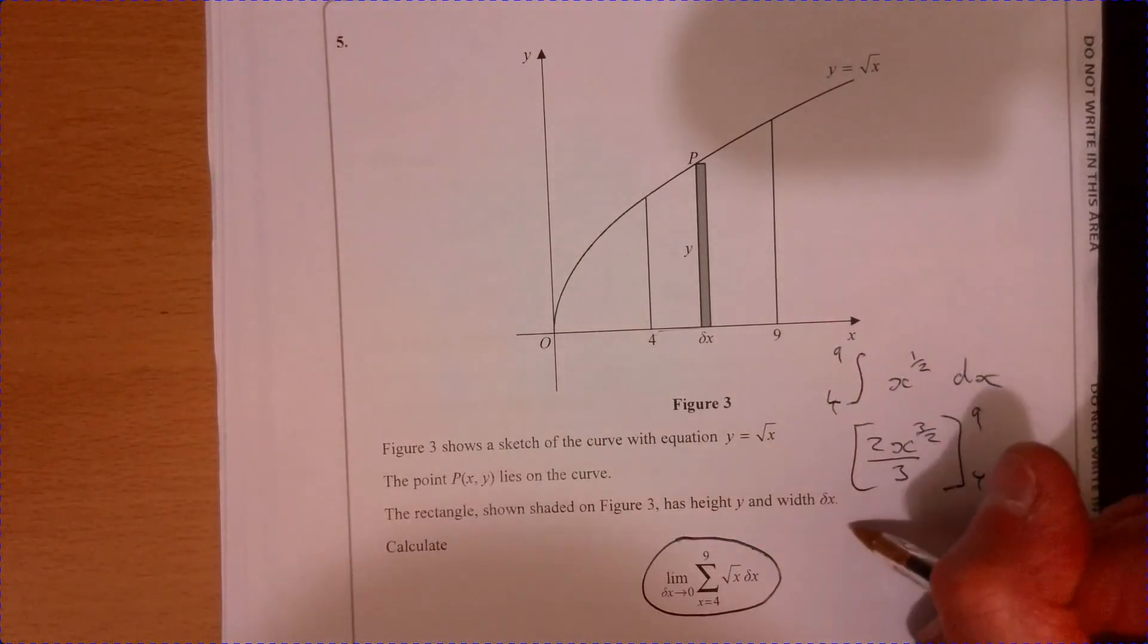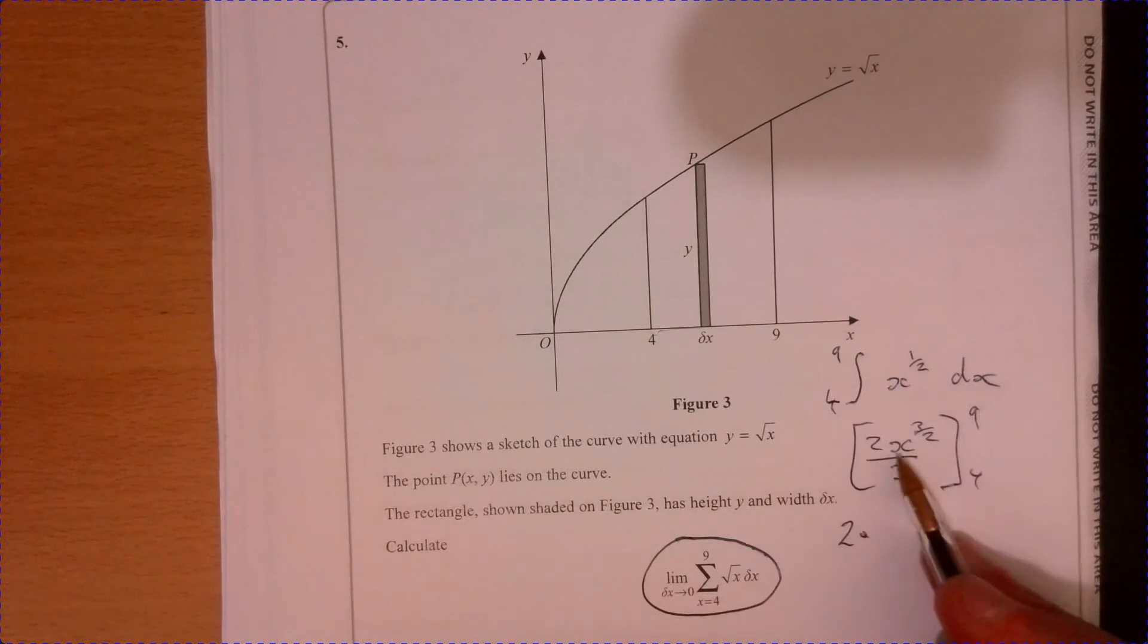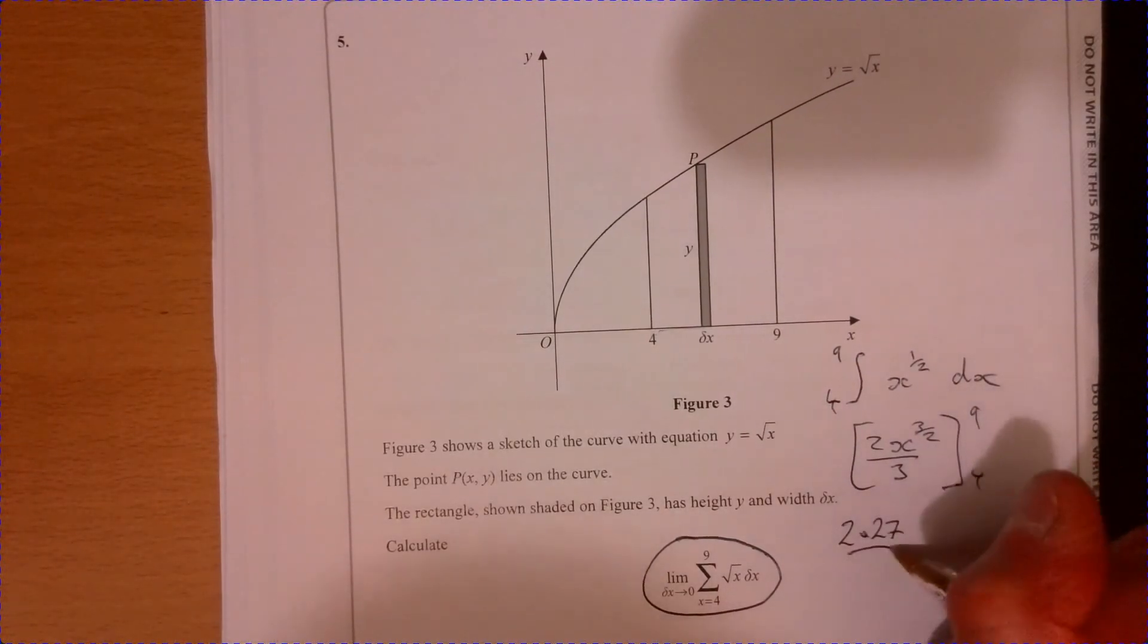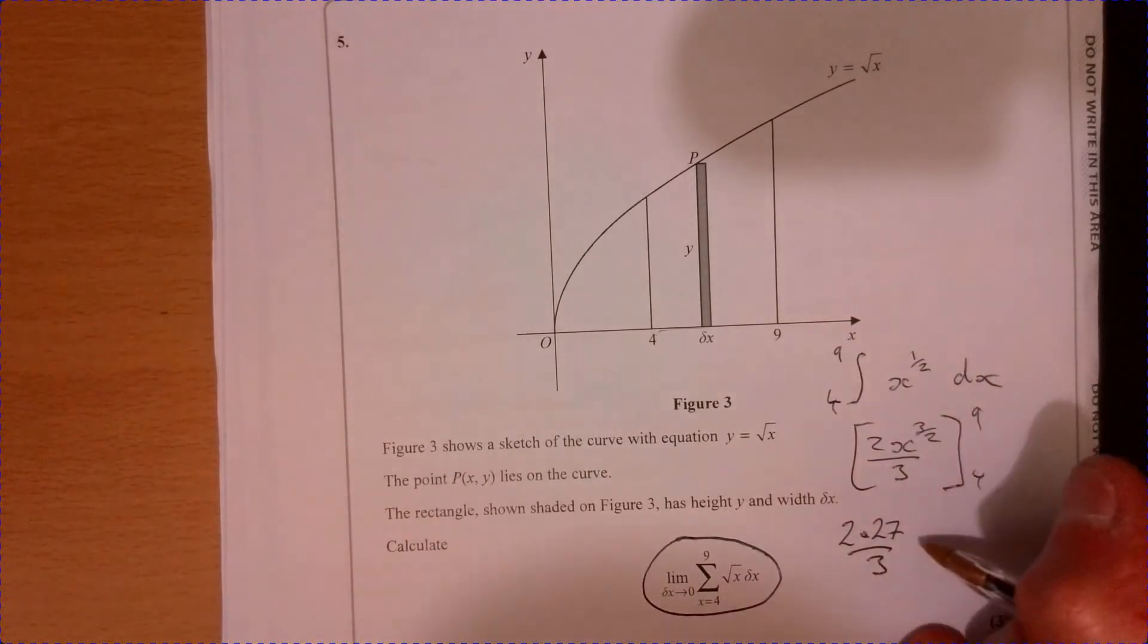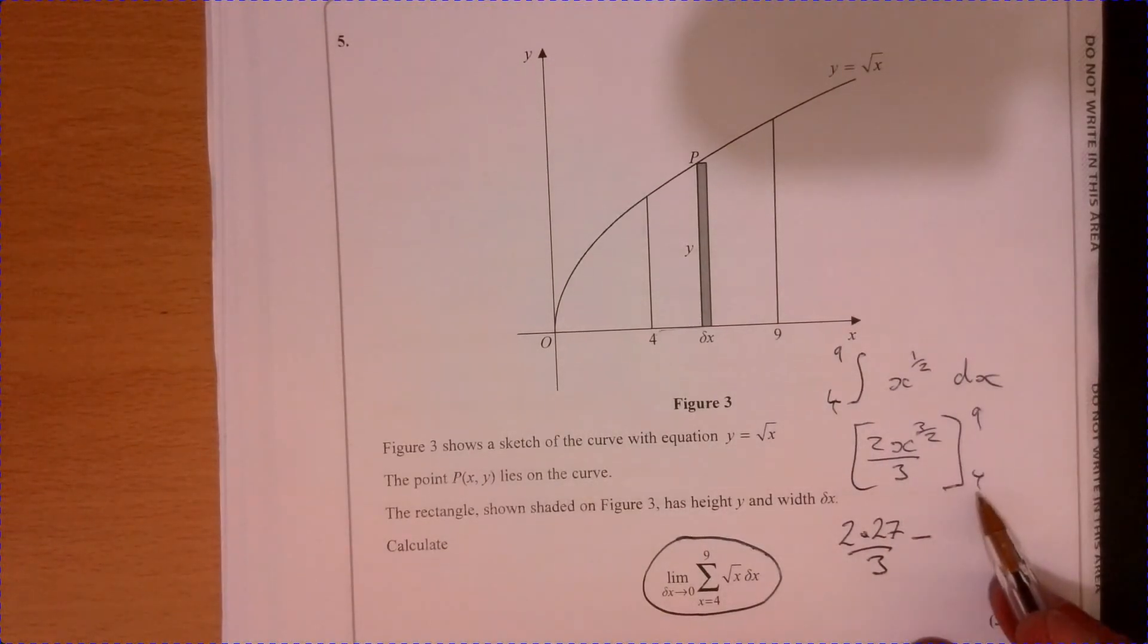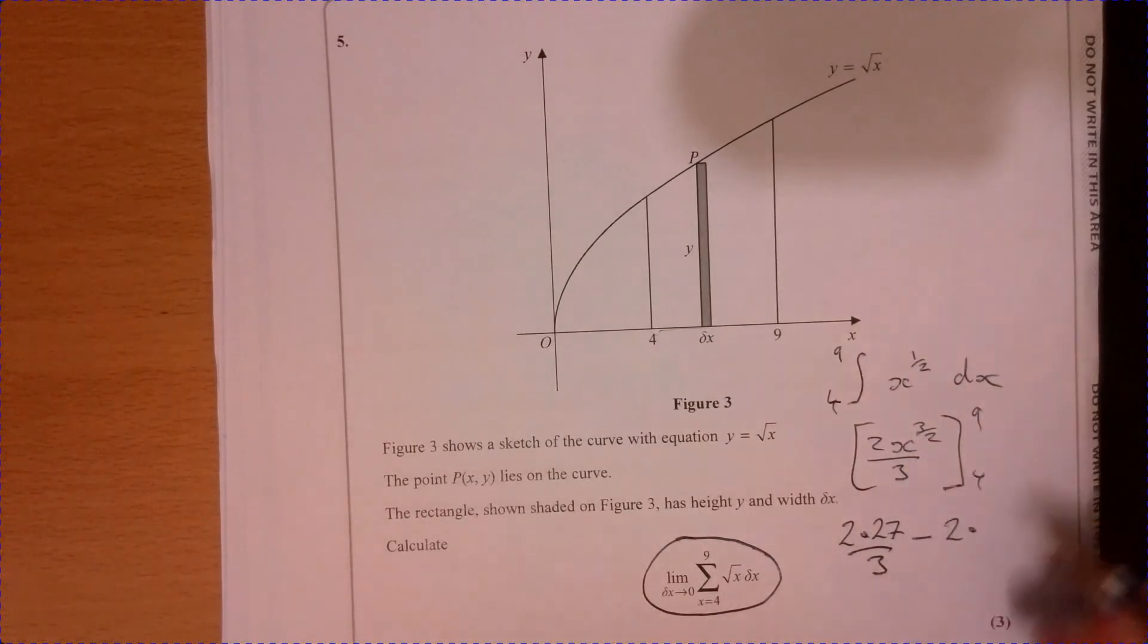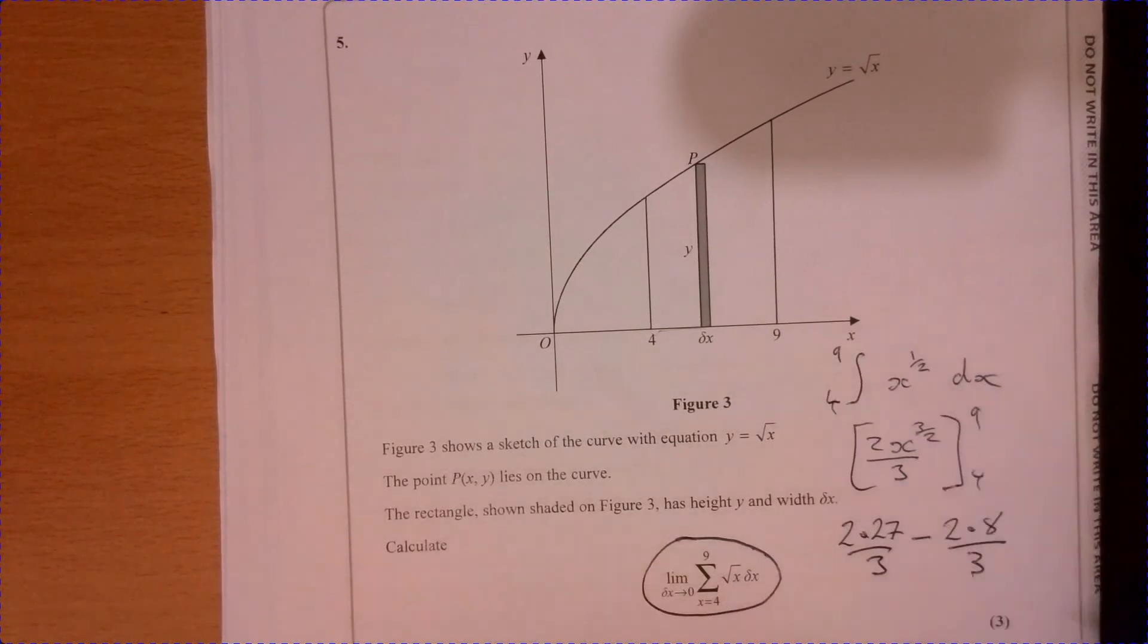And that will give us two multiplied by, so that's three cubed, that's 27, that's going to be over three. And then take away. That's going to substitute four into that. So we've got two, so that's two, so that's going to be eight over three.